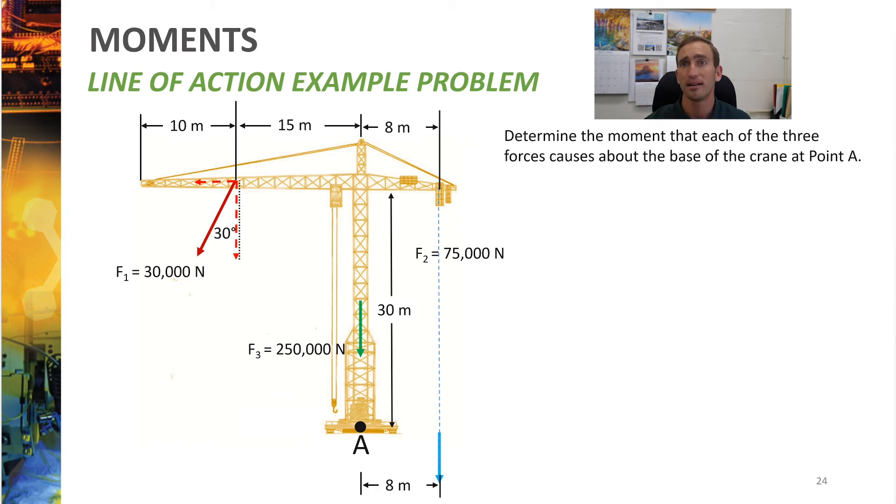But here's where my hint comes in handy. You can now use line of action to actually slide these two forces, F1 sine 30, the X component, and F1 cosine 30, the Y component. You can slide those along their line of actions until they become perpendicular to the pivot point of point A. So that's how you would do F1. You would actually use a combination of both the original method of components and line of action to solve.